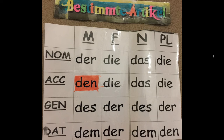So if you have an example: der Mann is 'the man'. If you were talking about 'the man has a coat', you'd use the verb haben. Haben is a verb that 90% of the time takes the accusative case. A coat is der Mantel. The man is the subject of the sentence, and the coat is the object. The object of a sentence always goes into the accusative case, so der goes to den: der Mann hat den Mantel.